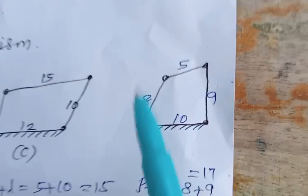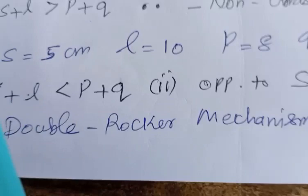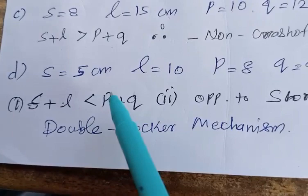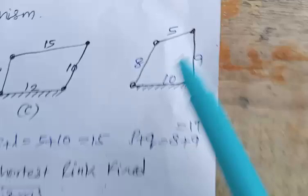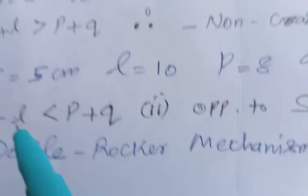For the last figure with link lengths 10, 8, 5, and 9 cm: S = 5, L = 10, P = 8, Q = 9. S + L = 15, P + Q = 17. Since S + L ≤ P + Q and the link opposite to the shortest link is fixed, we obtain a double rocker mechanism.